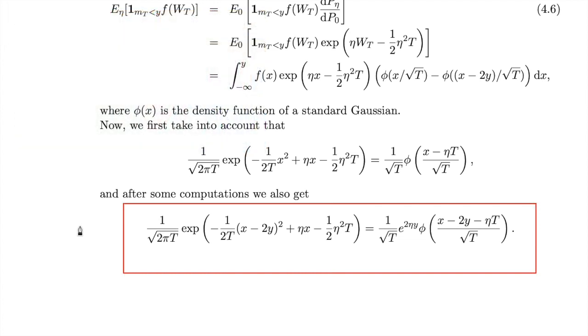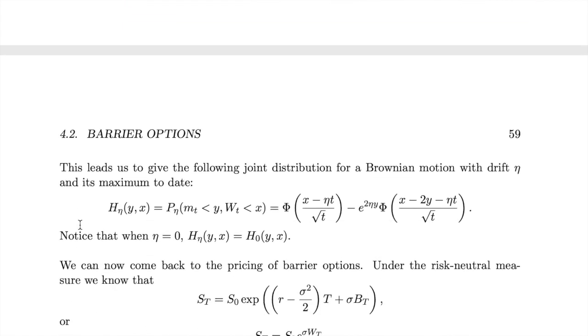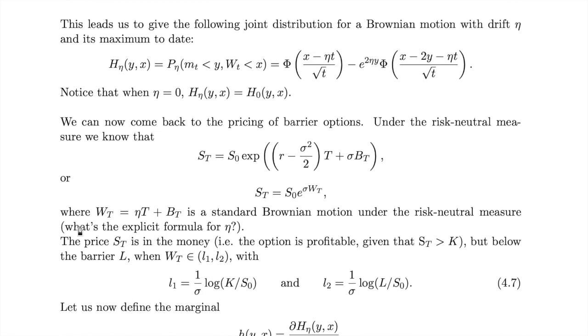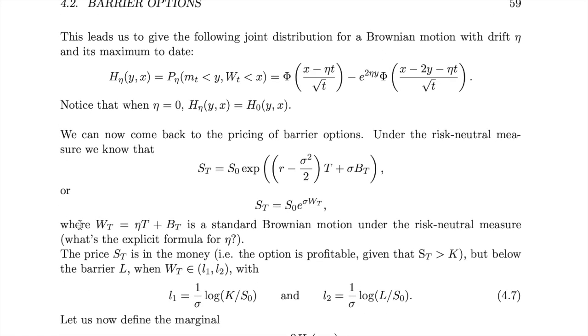Therefore, we can explicitly give the distribution for the Brownian motion with drift eta and its maximum to date, which is the quantity h eta y x that you see on your screen, and that resembles clearly what we have found before for the standard Brownian motion.